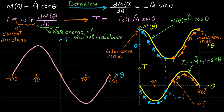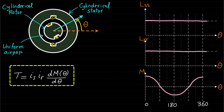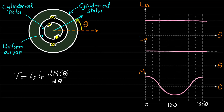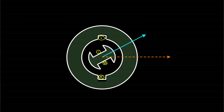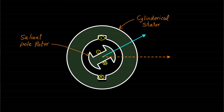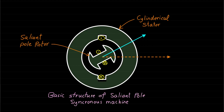It is very clear that the generated torque of this double-excited system will cause some movement; however, the movement is not continuous rotation. To achieve rotational movement, we need multiple coils in the stator and maybe multiple coils in the rotor. Let's take another example. This machine cross-section structure consists of a cylindrical stator and salient pole rotor, representing the basic structure of the salient pole synchronous machine.